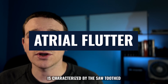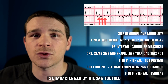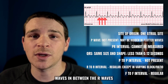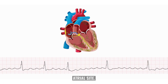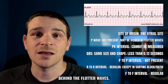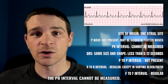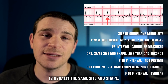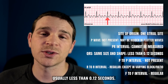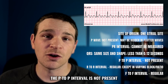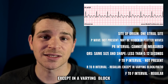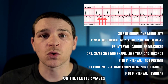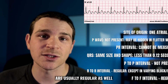Atrial flutter is characterized by sawtooth waves in between the R waves, called flutter waves. The site of origin is usually one atrial site. P waves are usually not visible — they are hidden behind the flutter waves. The PR interval cannot be measured. The QRS is usually the same size and shape, less than 0.12 seconds. The R to R interval is usually regular, except in a varying block, and the flutter waves are usually regular as well.